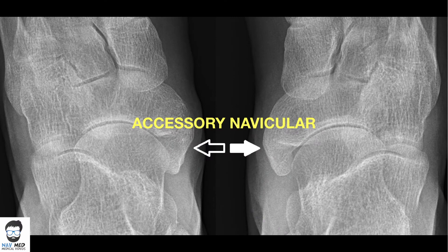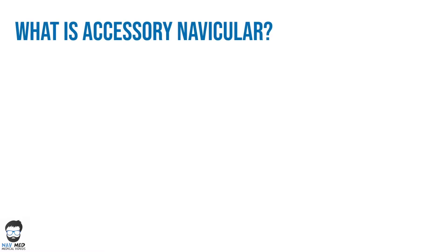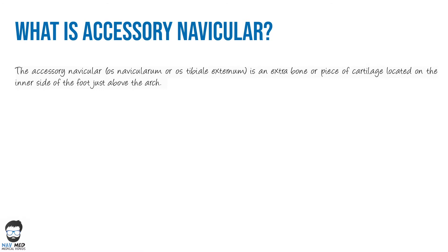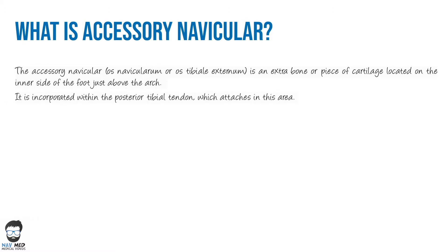Welcome to another lecture. We're going to look at accessory navicular and one of its main features. Accessory navicular is also called os naviculare or os tibiale externum. It is an extra piece of bone or cartilage located on the inner side of the foot just above the arch, composed within the posterior tibial tendon — essentially a sesamoid bone within that tendon.